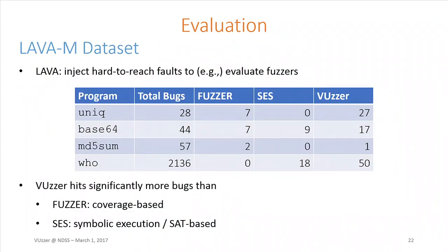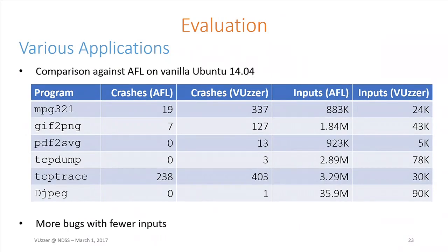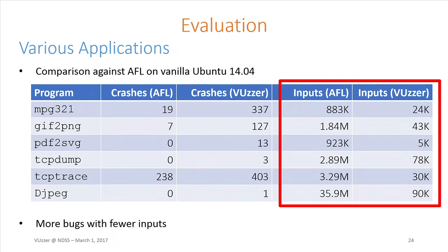We also looked at the LAVA dataset — a project where hard-to-reach faults are injected into binary programs to evaluate fuzzers. For the 'uniq' binary, 28 artificial bugs were inserted. The existing fuzzer finds only seven of those; the SES symbolic execution-based variant didn't find any bug; and VUzzer actually hit almost every one of them. Finally, we looked at a set of real-world applications and compared against AFL on vanilla Ubuntu 14.04. In general, we see fewer crashes from AFL, while VUzzer is able to generate more crashes while having to provide far fewer inputs — more bugs with fewer inputs.